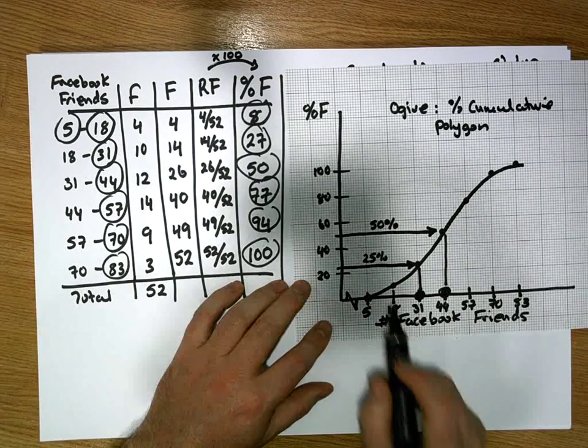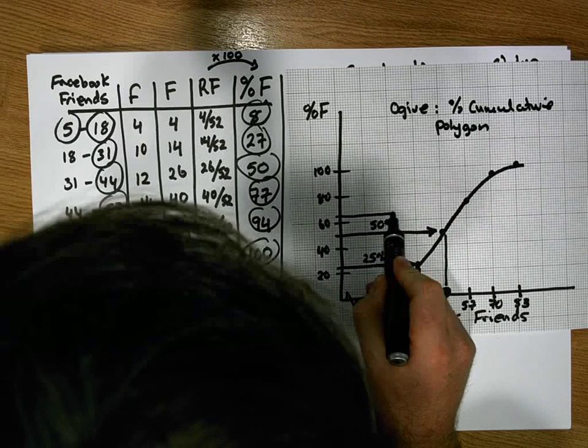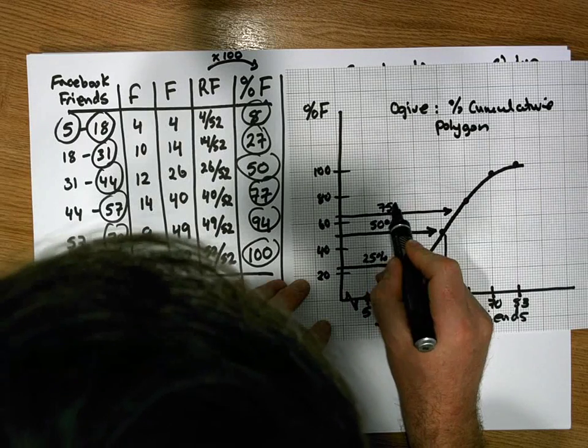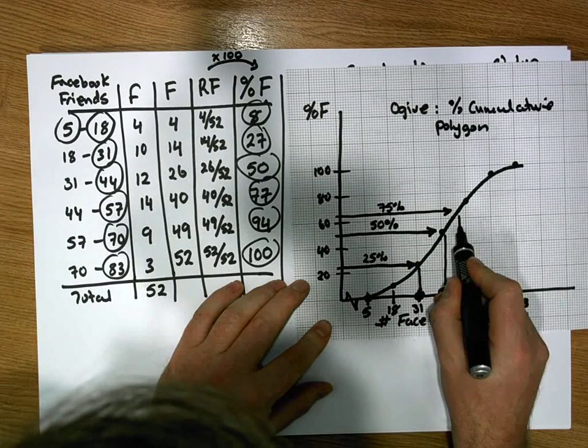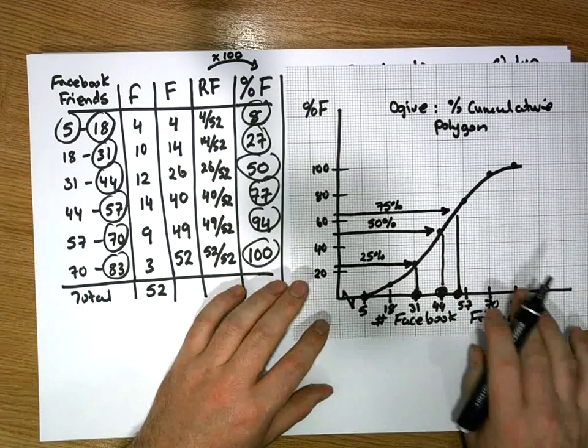And the third quartile is at the 75% mark, which is in around here. If I come across the data set and if I drop down, this is the 75% mark. This will give me where the third quartile is. So let me just write that down here.